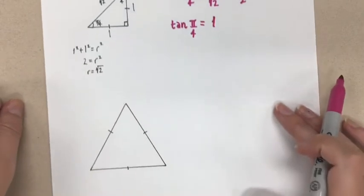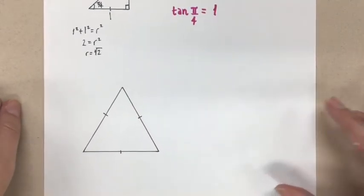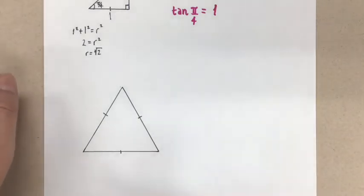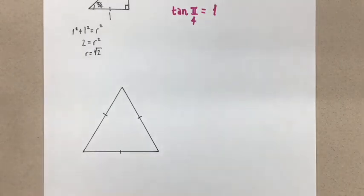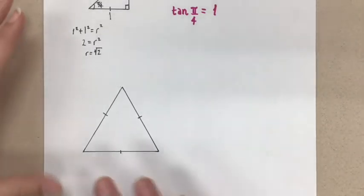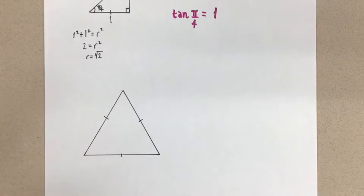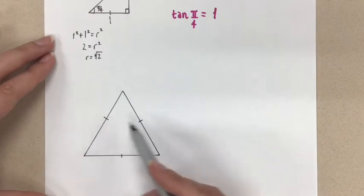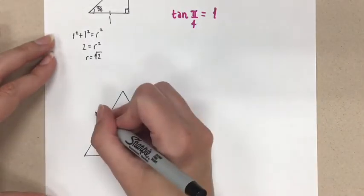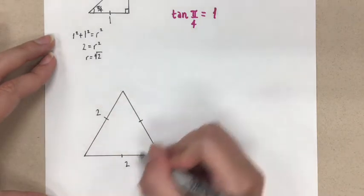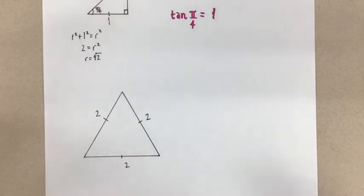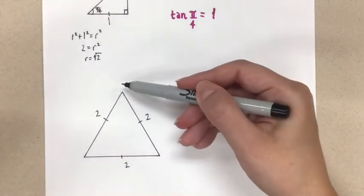Now we need the special angles pi over 3 and pi over 6. So this time we're going to start off with an equilateral triangle. This equilateral triangle is going to allow us to get the angles that we require. I know you're thinking we don't have a right angle here, and we need a right angle in order to use the trig ratios. But we're going to create a right angle in just a minute. To start off, I'm going to label each of these side lengths as 2 — and you'll see why in just a moment. So they're all going to be equal to 2. But I need a right angle, so I'm going to take this equilateral triangle and cut it in half.